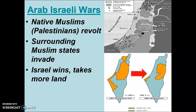The surrounding Muslim states are going to support the Muslim Palestinians by invading Israel, and they do this several times. We have several Israeli-Arab wars. When the UN originally created Israel, they divided Israel and Palestine — the more yellow areas you see here are Palestinian land and the blue areas are Israeli land. When we have these Arab-Israeli wars, Israel is going to win and take more land. So by 1967, this is the area that Israel occupies versus the Palestinian areas.